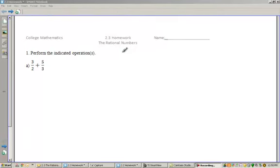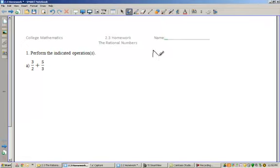All right, so this is 2.3 homework on the rational numbers. Let me remind you what we're doing. So the idea, really we start with these natural numbers here, which is 1, 2, 3, and so on.